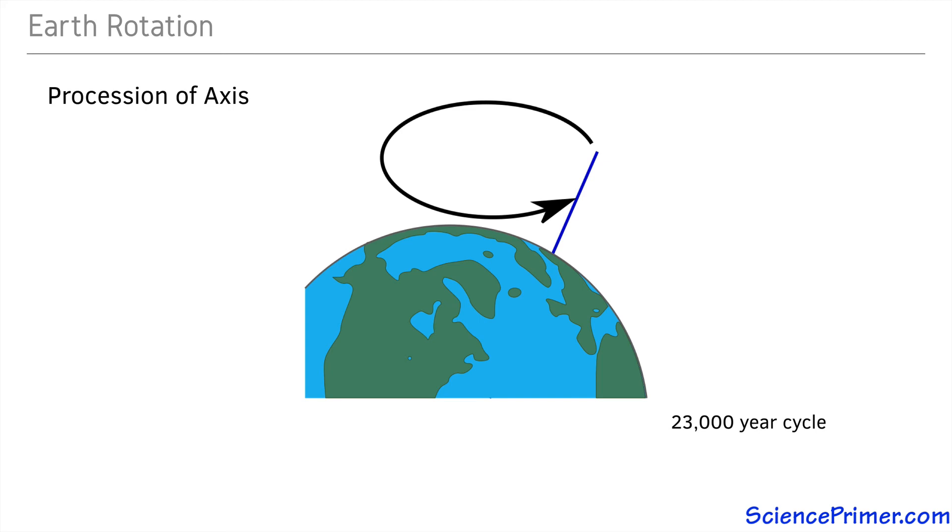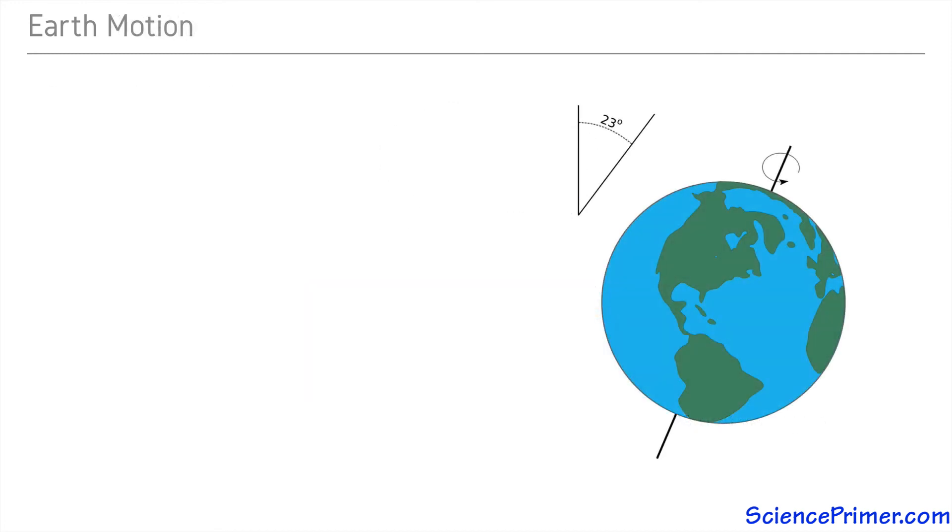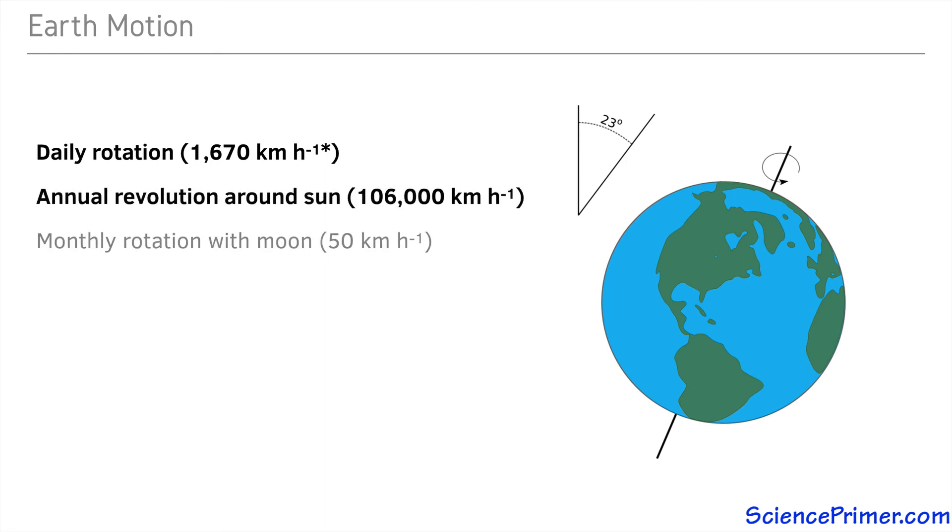Over the cycle, the point in the year where the Earth is closest and furthest from the sun changes. In addition to the Earth's rotation around its own axis once a day and its orbit of the sun once a year, the moon-Earth system rotates once a month, our solar system moves relative to the rest of the galaxy, and our galaxy is in motion relative to the rest of the universe.